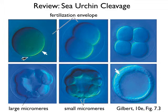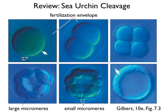Sea urchins are deuterostomes and they undergo radial holoblastic cleavage. This figure shows that a fertilized sea urchin egg develops a fertilization envelope, then undergoes first cleavage to form two cells, then four cells, and after two more cleavages the embryo has undergone some asymmetric cleavages. The cleavages are radial but you get cells of very different sizes. At the extreme vegetal pole of the embryo we get micromeres.